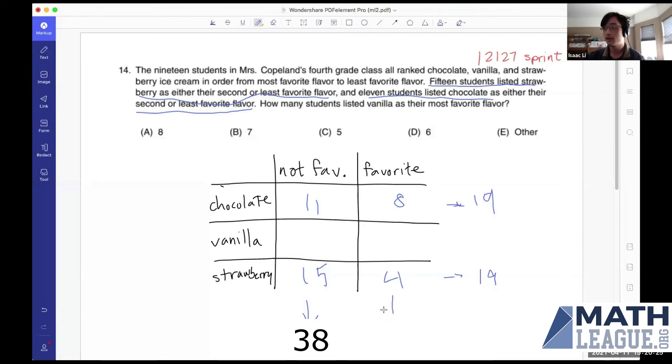Finally, we have this column here adds all up to 19. So we have eight plus vanilla plus four equals 19. So this number here is 19 minus four minus eight equals seven. So this is our answer and we'll circle this one.